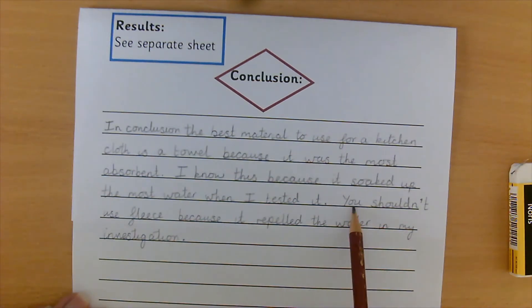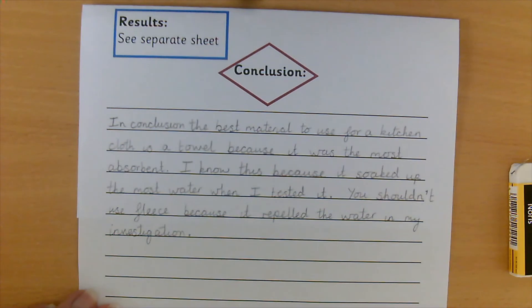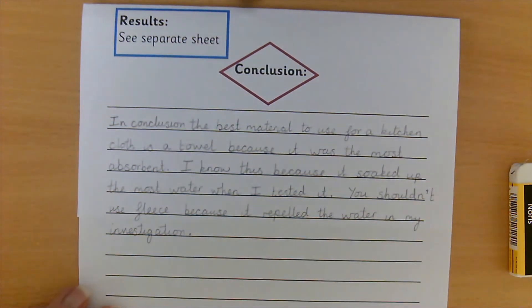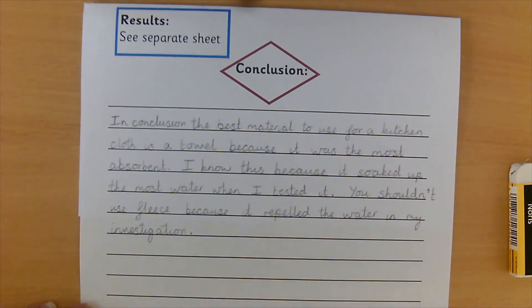So I have written, you shouldn't use fleece because it repelled the water in my investigation. And the last thing to do is write a sentence linking it back to the reason we did this investigation in the first place. So we know that using kitchen roll every time you need to mop something up, mop up a spillage, isn't a good idea because kitchen roll is single use. It gets used once and then it gets thrown away and it ends up filling up landfill sites. And if you use a cloth to mop things up and then wash the cloth when it gets dirty, it's much better for the environment. So I'd like you to write a sentence to finish your conclusion explaining that. Off you go.